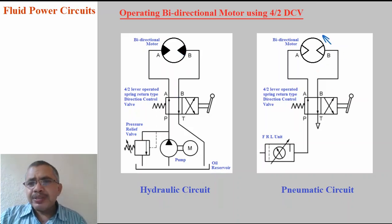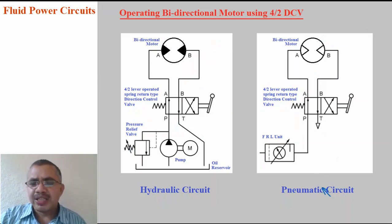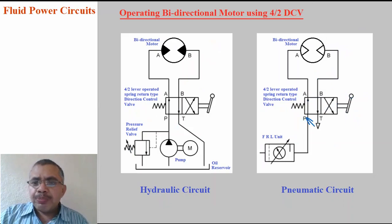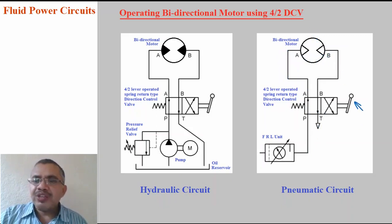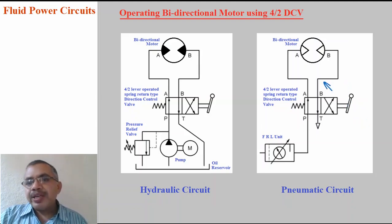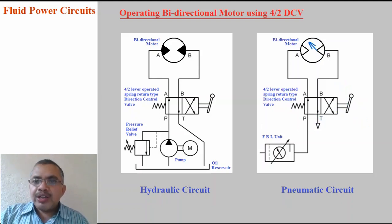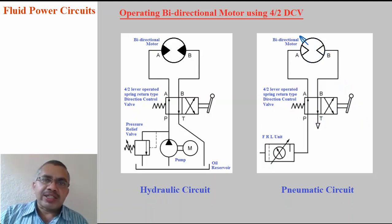The same applies in the pneumatic circuit. In the first position, P to A and B to T2 connection is made — compressed air flows from A to B in the motor and it rotates in forward direction. When the lever is shifted to the second position, P to B and A to T connection is made — the motor starts rotating in the reverse direction.